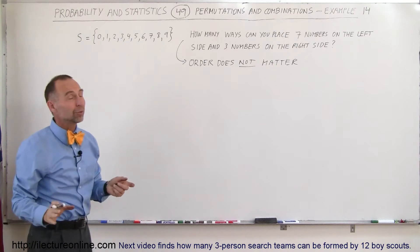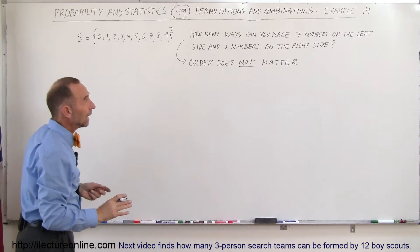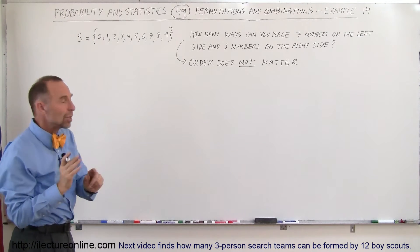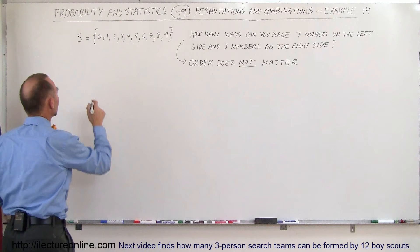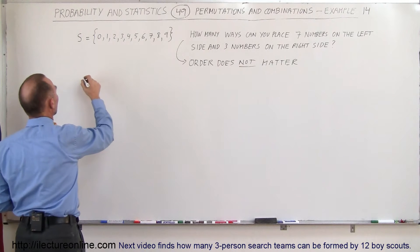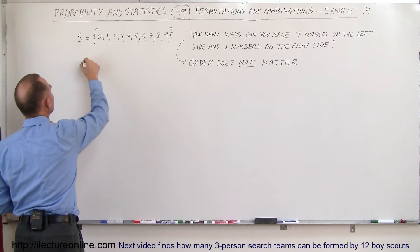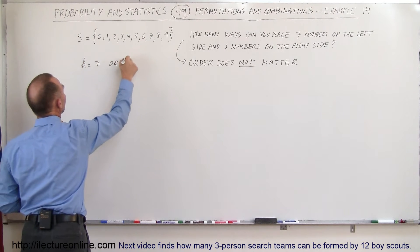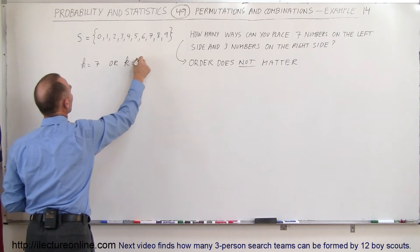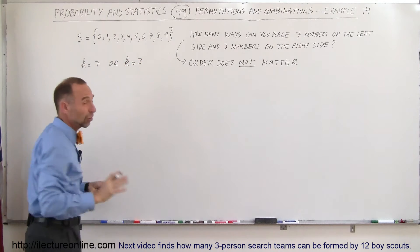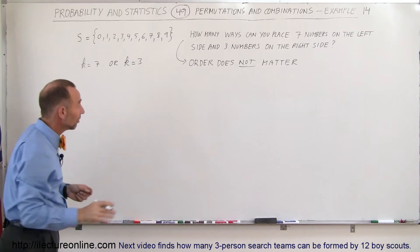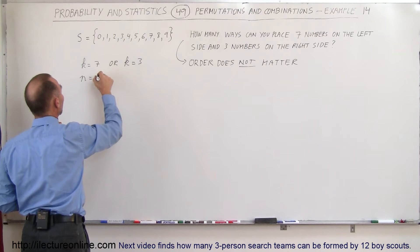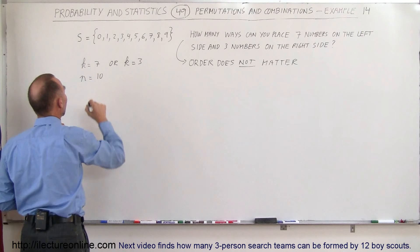There are 10 numbers, and we're going to separate them into groups of 7 and 3. So k is equal to 7, or you can say k is equal to 3 — it really doesn't make any difference. And n is the total number of numbers in the sample space, which is 10.